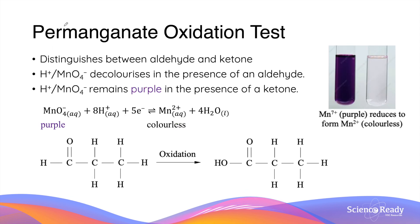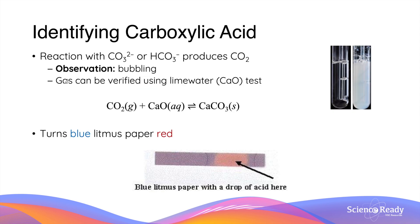Similarly, an acidified solution of permanganate ion can also be used as a reagent. In this case, when added to an aldehyde, the purple colour of permanganate decolourises, while it remains purple in the presence of a ketone as there is no oxidation reaction.